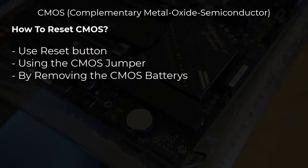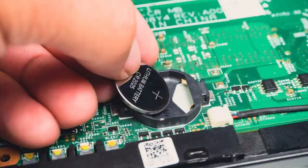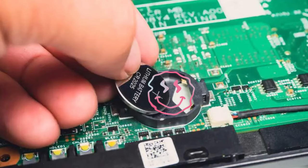Another method is removing the CMOS battery. Turn off your computer and unplug it from the power source. Locate the CMOS battery on the motherboard — it's a small, round, silver battery. Carefully remove the battery; you might need a small flathead screwdriver to gently pry it out. Wait about 5 to 10 minutes to ensure all residual power is drained. Then reinsert the battery, plug in your computer, and turn it on.